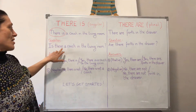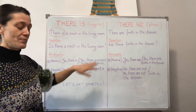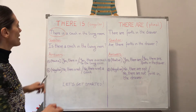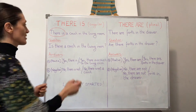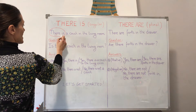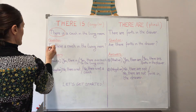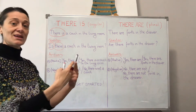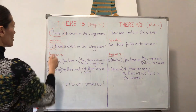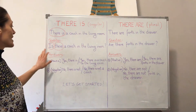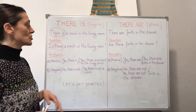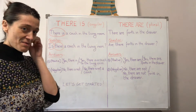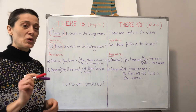Is there a couch in the living room? Notate e ricordate: nella domanda si cambia la posizione di 'there' e 'is'. 'Is' verrà messo al primo posto e 'there' al secondo posto — si scambiano. La domanda sarà: 'Is there a couch in the living room?' — c'è una poltrona nella sala da pranzo.